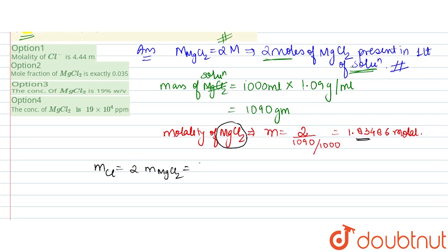The molality of Cl works out to 3.6697 mol/kg. Option 1 states 4.44, which does not match, so Option 1 is incorrect.